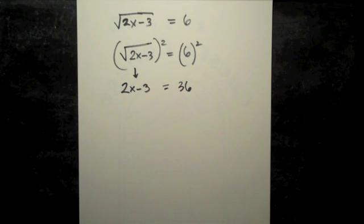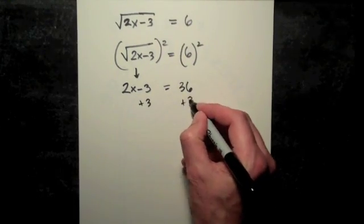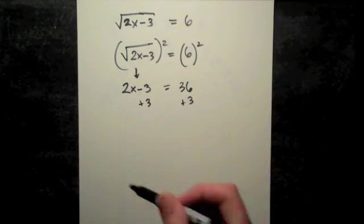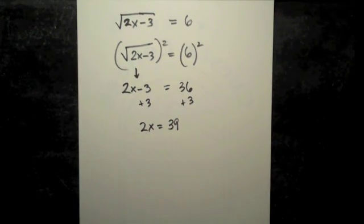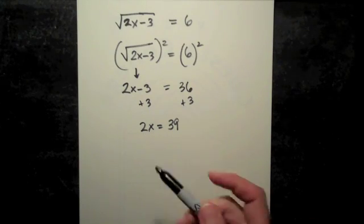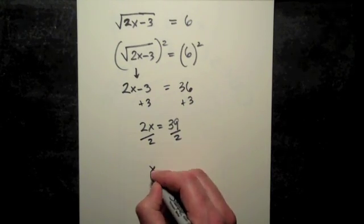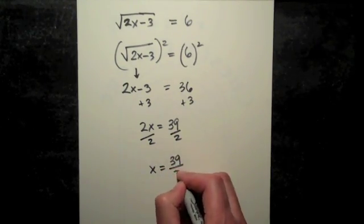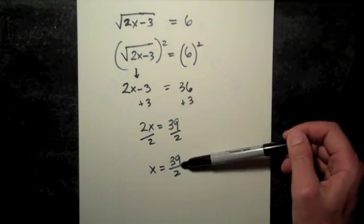The right side is just going to be 6 squared which is 36. So here's our new equation and we're going to solve that by simply adding 3 to both sides. This is a nice linear equation and now divide by 2. Now we're trying to isolate x and we get x equals 39 halves. So that's the end of step three, solving the new equation.